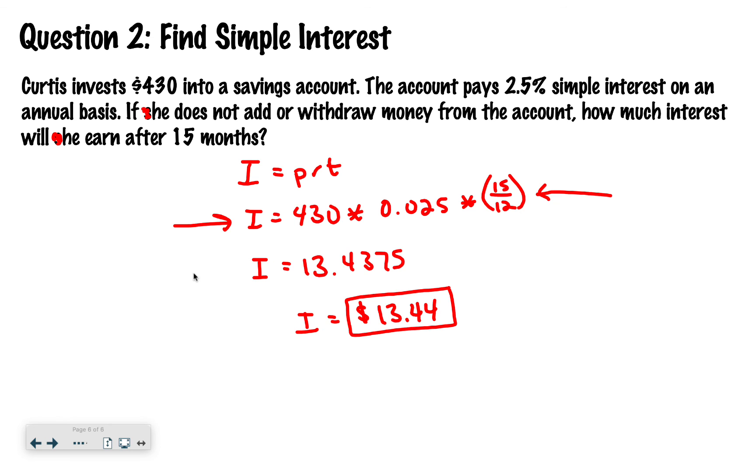All right. Hopefully you set up your equation to look like the one that I put arrows on either side of. I equals 430 times 0.025 times 15 divided by 12. And once you calculate that out, you should get 13.4375, which if you round for money, that means two decimal places, this seven is going to change the three into a four. So that's how I got $13.44.